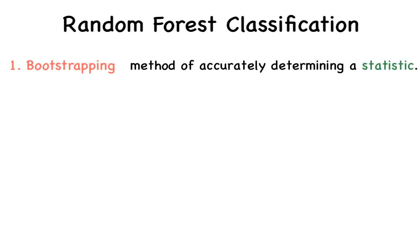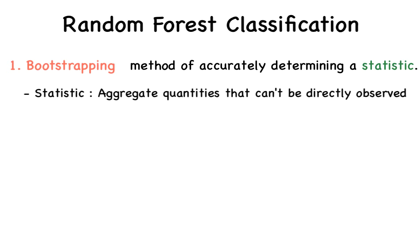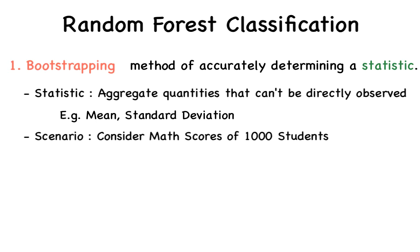Like I mentioned before, we are going to train a random forest classifier. Before I explain this, it's important to understand two key terms, bootstrapping and bagging. Bootstrapping is a method of accurately determining a statistic. These statistics are aggregate quantities that cannot be directly observed. For example, the mean of test scores of students in a class. Consider a school with a thousand students. One can easily compute the mean math score of all students with a simple formula. That is, taking the sum of all scores and dividing it by the total number of students.